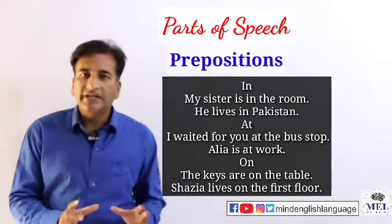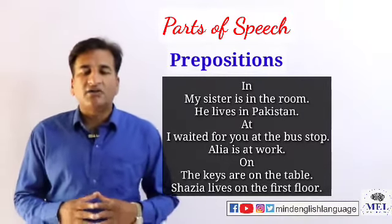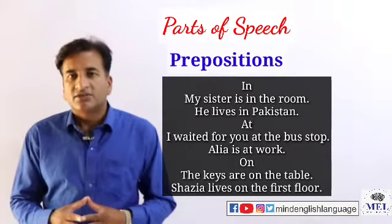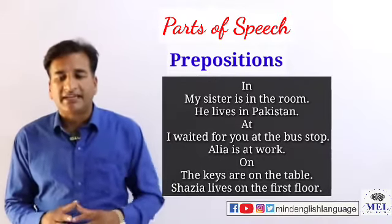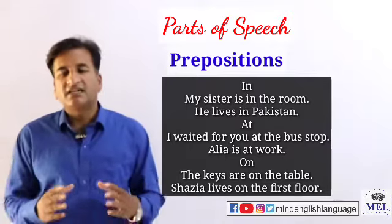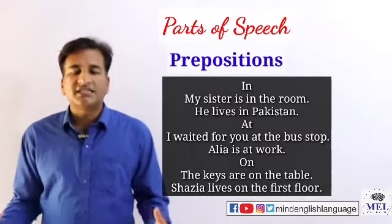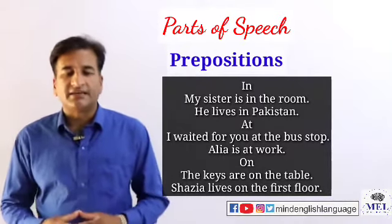'on' کیسے preposition of place کے طور پر use ہوتا ہے: 'The keys are on the table' — جو چابیاں ہیں وہ table پر ہیں۔ 'Shazia lives on the first floor' — شازیہ پہلے floor پر رہتی ہے۔